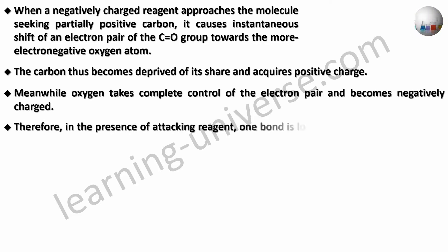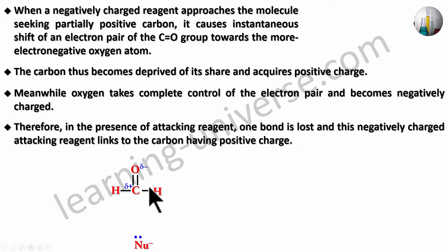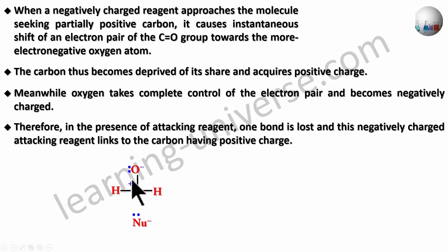Therefore, in the presence of the attacking reagent, the pi bond is lost and the negatively charged attacking reagent links to the carbon which now has a positive charge. The nucleophile attacks, carbon becomes positive, oxygen becomes negative, and the nucleophile forms a bond with the carbon. The nucleophile loses its negative charge and a bond is formed. That is how we observe the Electromeric effect in a carbonyl compound — this is the minus E effect.